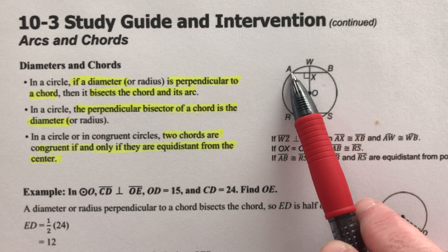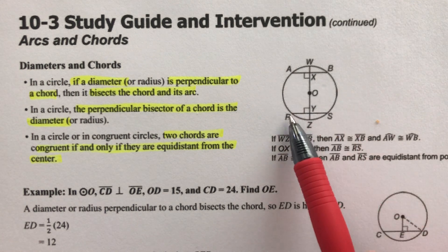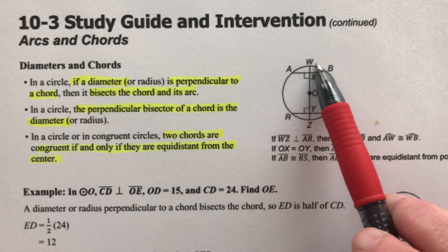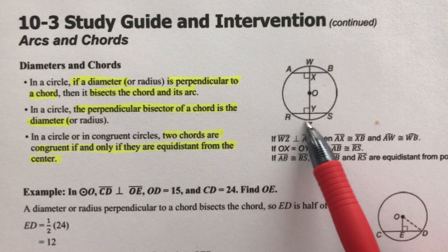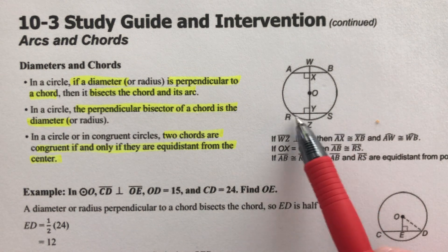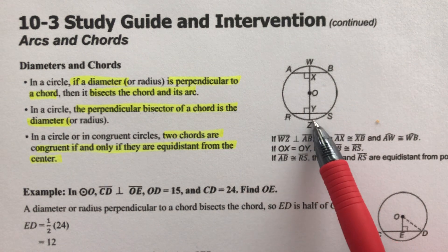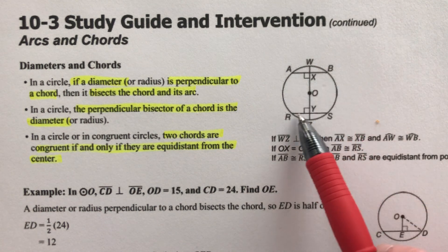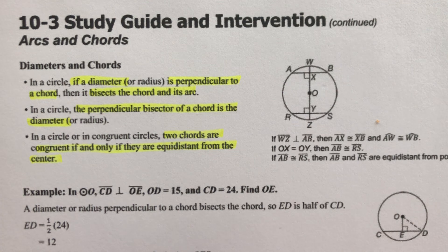If chords are the same length, then arcs are the same measure. And vice versa — if arcs are the same measure, we know chords are the same length.